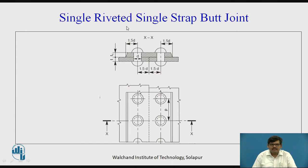Then we have single riveted single strap butt joint. These are the two plates — the first plate and the second plate — which are to be joined with the help of an additional plate called the strap. Single strap because only one cover plate is present. Butt joint because the plates to be joined are placed face to face in front of each other. Single riveted because one line of rivets passes through each plate.